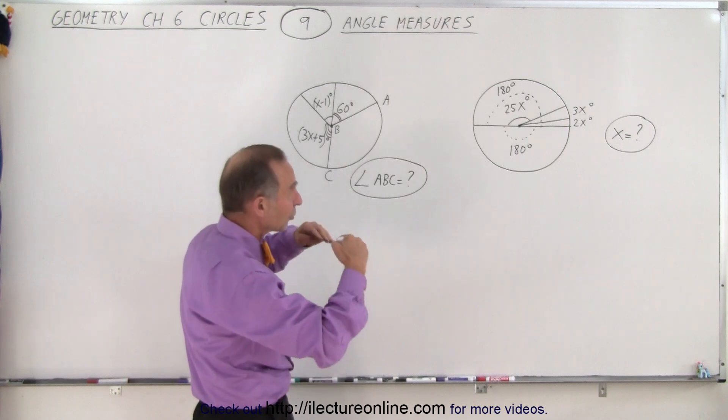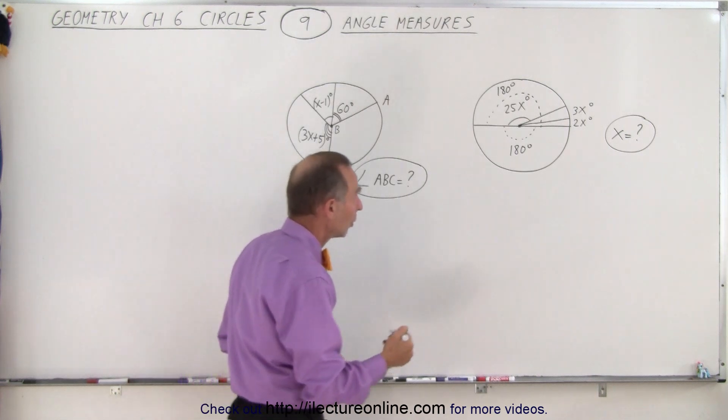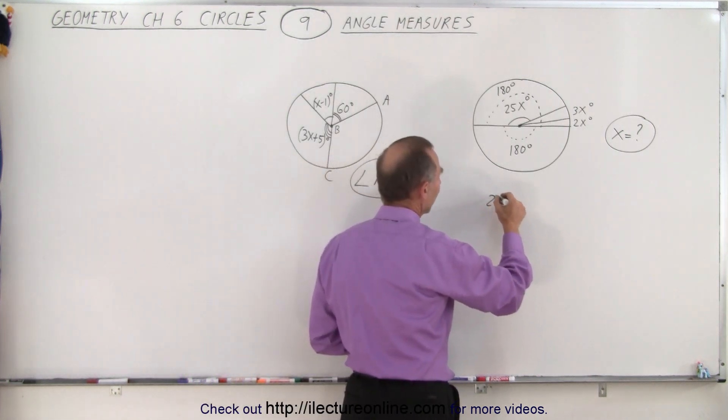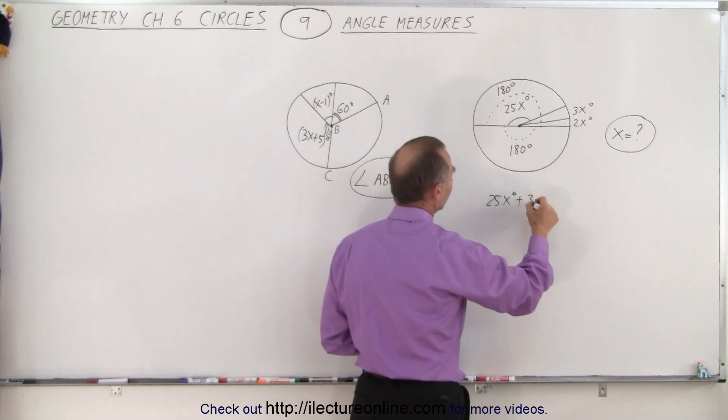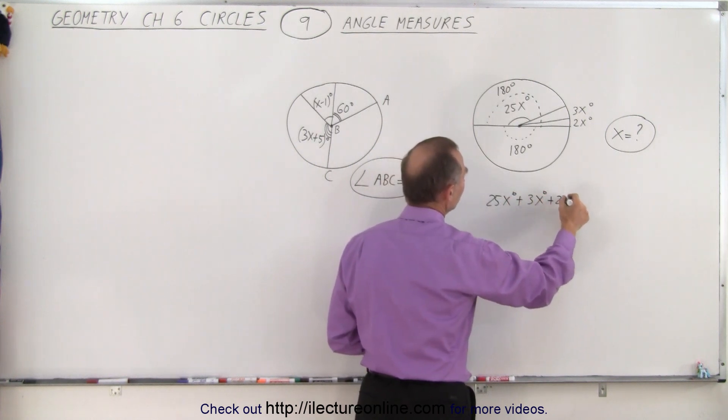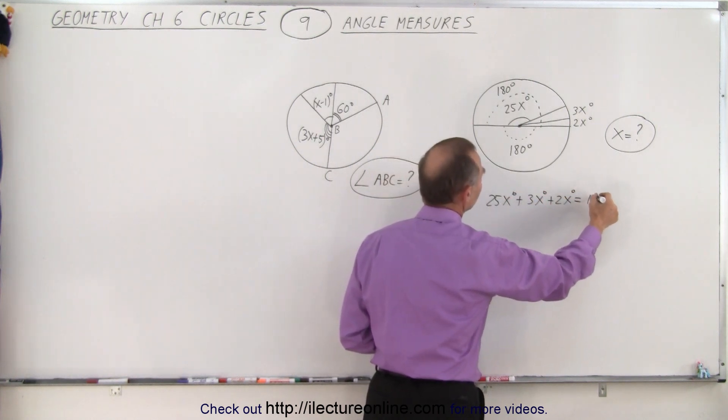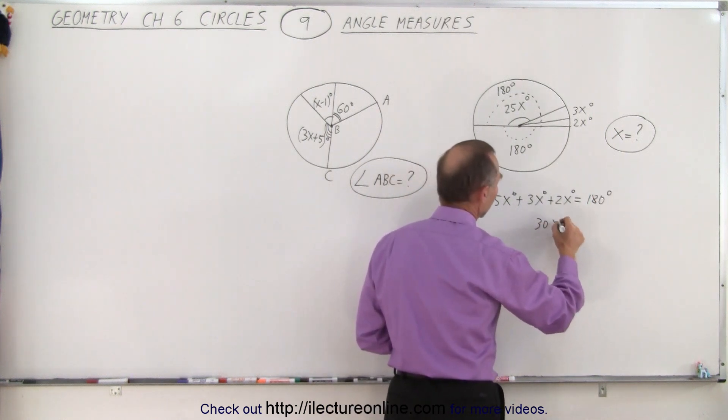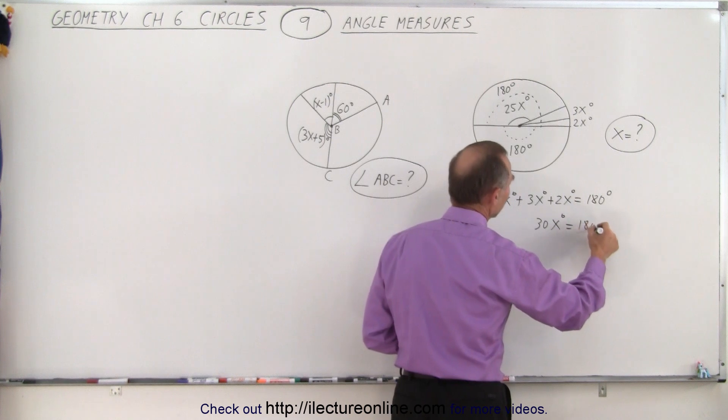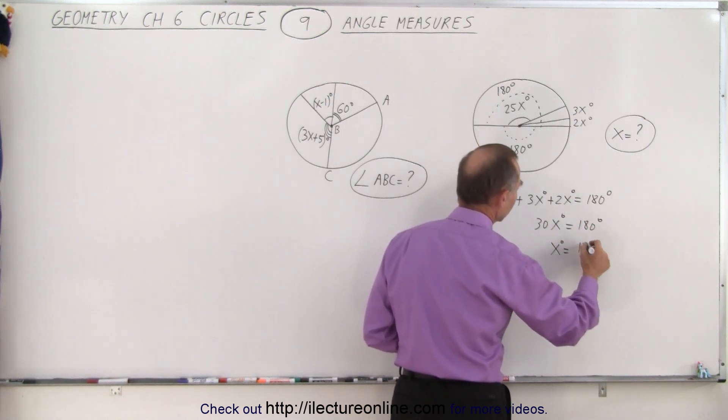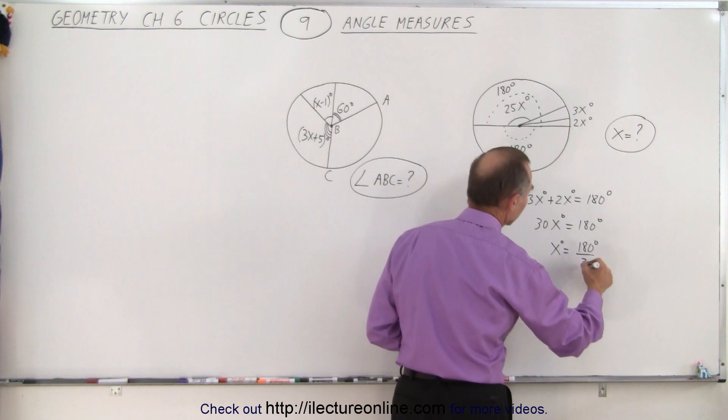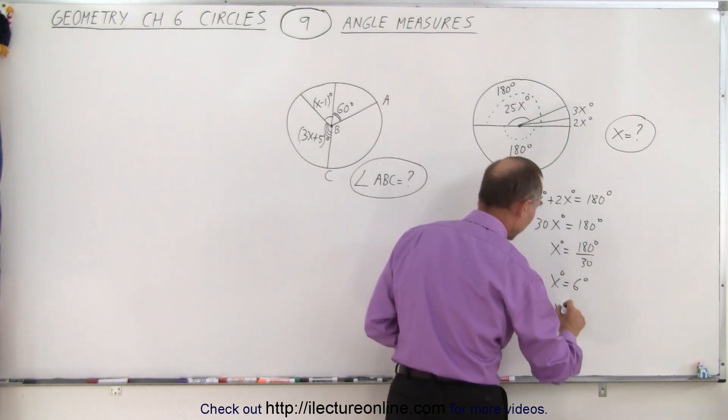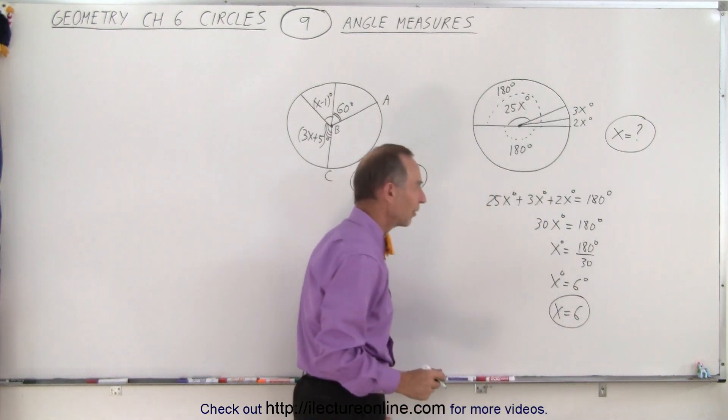So in this case, since all three angles make up the top half of the circle, we can say that 25x degrees plus 3x degrees plus 2x degrees equals 180 degrees. When we add these together we get 30x degrees equals 180 degrees, or x degrees equals 180 degrees divided by 30. So x degrees equals 6 degrees, or x equals 6.